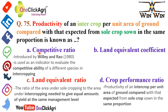The competitive ratio was given by Willey and Rao in 1980 and is used as an indicator to evaluate the competitive ability of different species in intercropping. The crop performance ratio means the productivity of an intercrop per unit area compared with that expected from sole crop sown in the same proportion.